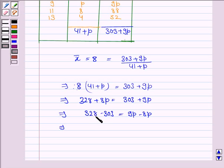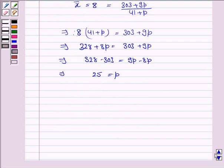Now, 328 minus 303 is 25, and 9p minus 8p is p. So p equals 25. Hence the value of p is 25.